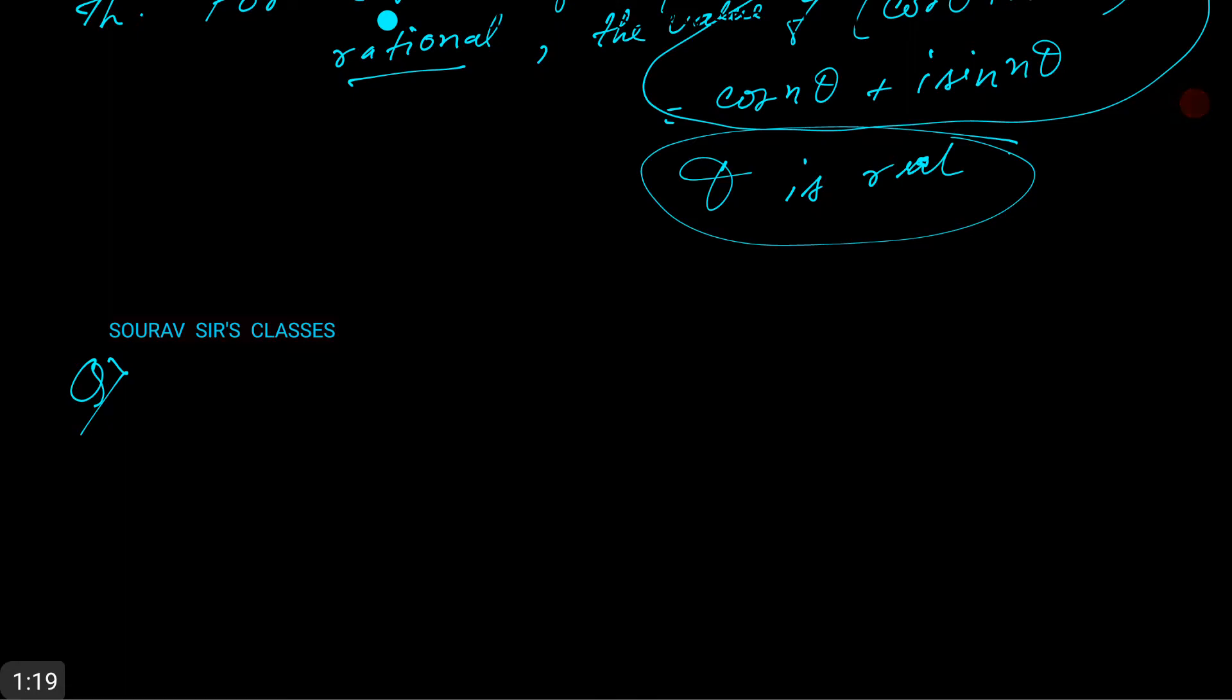The question asks us to simplify: (cos 3θ + i sin 3θ)^7 times (cos 5θ